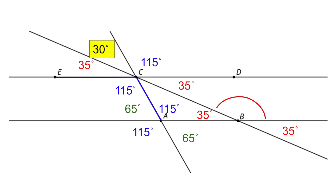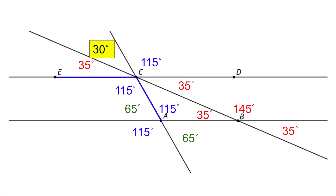To find the next missing angle, 180 degrees minus 35 degrees gives us the missing measure. The missing measure for that angle would be 145 degrees, and its corresponding angle would also be 145 degrees. It looks like we found all the missing angles, so let's go back and look at A, B, and C.